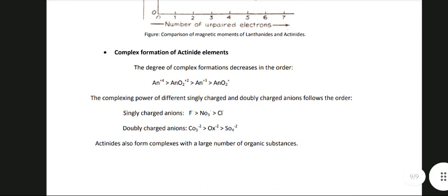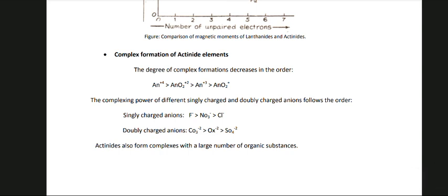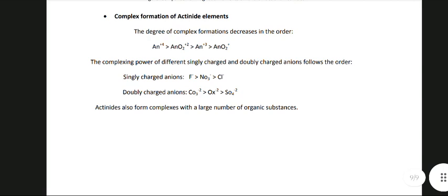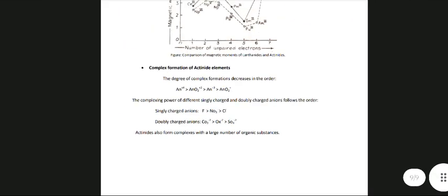Complex formation decreases in the order: An+4 > AnO22+ > An+3 > AnO2+. The complexing power of different anions follows the order — singly charged anions: F− > NO3− > Cl−; doubly charged anions: CO32− > Ox2− > SO42−. Actinides also form complexes with a large number of organic substances. This was our chapter — thank you for listening.